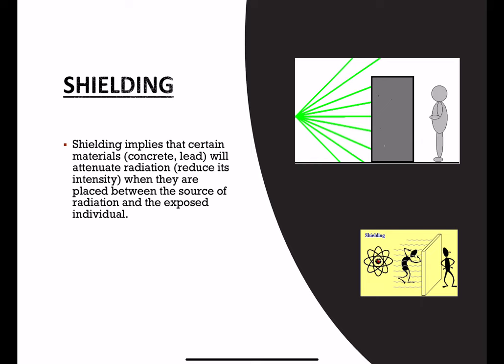Shielding implies that certain materials such as concrete or lead will attenuate radiation, and because of this attenuation the intensity of radiation will decrease when placed between the source of radiation and the exposed individual. For shielding materials, we use lead — a metal which has the property of blocking or absorbing x-ray radiation due to its high density. Various thicknesses of pure lead provide different levels of protection.